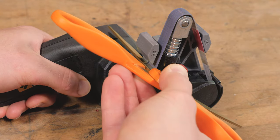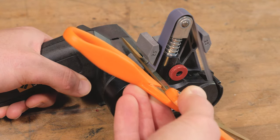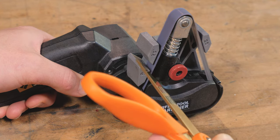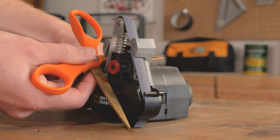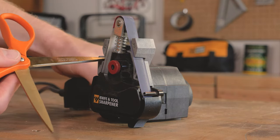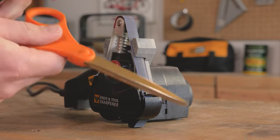Power on the sharpener and slowly and steadily pull the scissors across the guide. Two to five strokes should be sufficient to restore an edge on your scissors. Repeat on the opposite scissor blade.